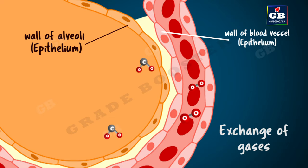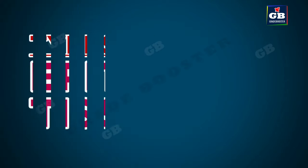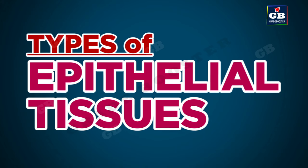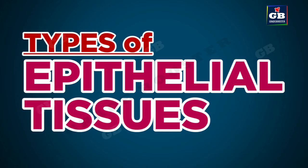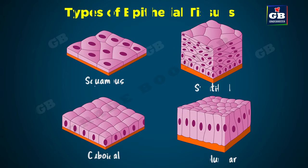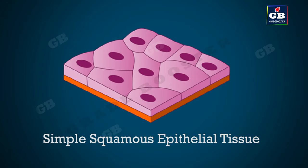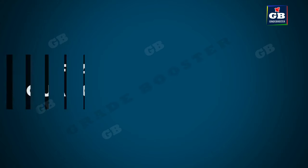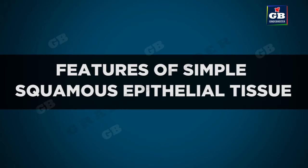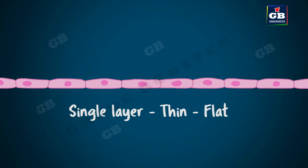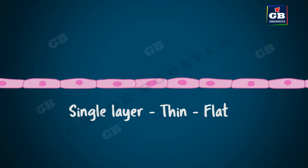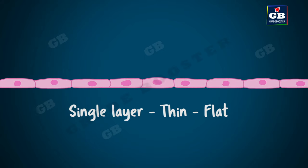Now let us learn about different types of epithelial tissue. Epithelial tissue is of different types depending upon their structure and functioning. The first one is simple squamous epithelial tissue. This tissue has a single layer of cells. These cells are extremely thin and flat.